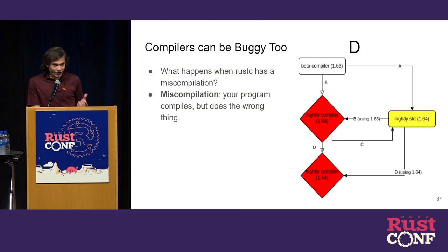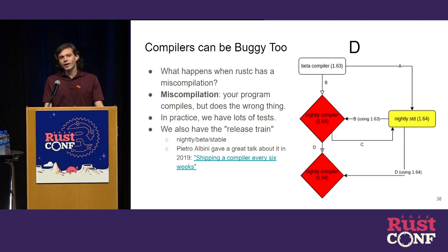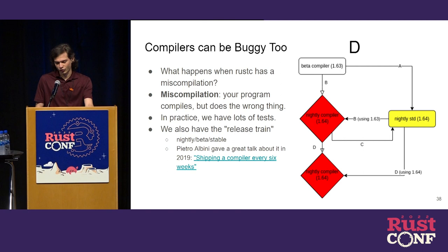In practice this doesn't happen often. We have a lot of tests, a lot of great reviewers who catch bugs in PRs, and we have the release train: nightly, beta, and stable. That gives people a lot of time to report bugs and let us fix them before they impact users on stable. There's a great talk by Pietro Albini from 2019 called "Shipping a Compiler Every Six Weeks" — I highly recommend looking that up if you're interested in how the release process works.